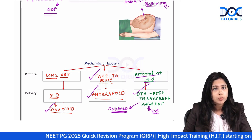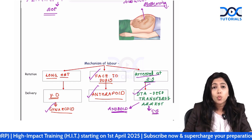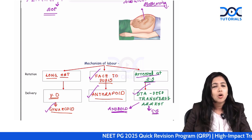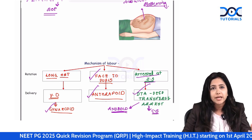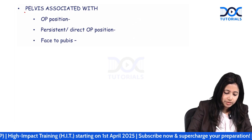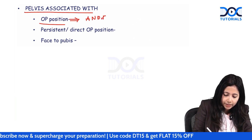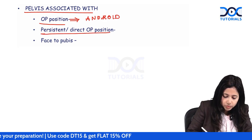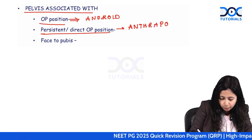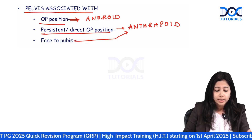Students please note: occipitoposterior does not always mean cesarean. It often takes a long time to rotate anteriorly, so we usually wait and watch. Now for one-liners: occipitoposterior position is associated with android pelvis. Persistent or direct occipitoposterior is associated with anthropoid type of pelvis. Face-to-pubes delivery is also associated with anthropoid type of pelvis.